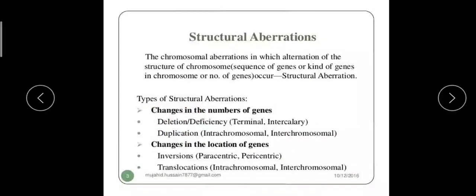Deletion means a segment of a chromosome is lost, so any gene occurring in that lost segment will also be lost — the number of genes changes. In duplication, a segment of a chromosome is duplicated, so any gene in that segment gains an additional copy, also changing the number of genes. Changes in the location of genes are of two types: inversion and translocation.